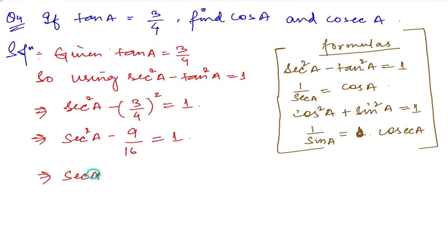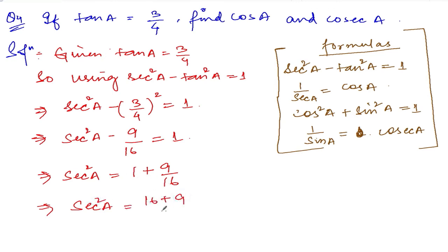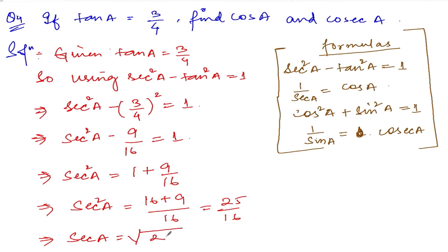Transferring 9/16 to the other side: sec²(a) = 1 + 9/16 = 16/16 + 9/16 = 25/16. Therefore, sec(a) = √(25/16) = 5/4. We got the value of sec(a) as 5/4, but the question asks for cos(a) and cosec(a).